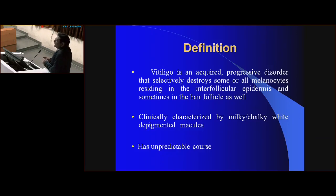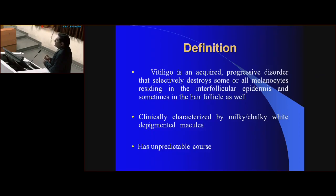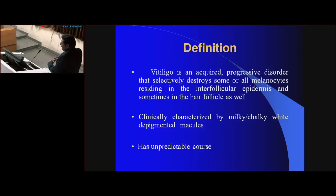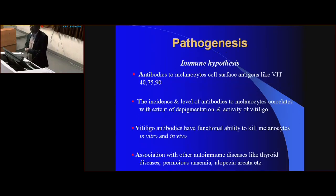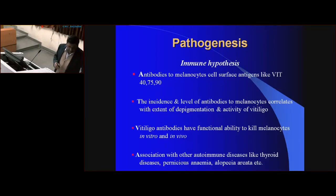Either the melanocytes residing in the basal cells are destroyed, or those in the hair follicles are destroyed. Melanocytes are found in other sites apart from the skin, for example in the iris. Understanding the pathogenesis is important to understand how to treat the disease.